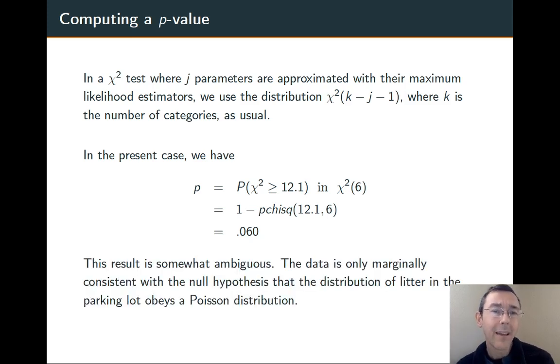That's a pretty ambiguous p-value. If we had set alpha equals 0.05, this would be greater than that, so we would not reject the null hypothesis. But we should recognize that it's still a fairly small p-value. The data is only marginally consistent with the null hypothesis that the distribution of litter in the parking lot obeys a Poisson distribution.